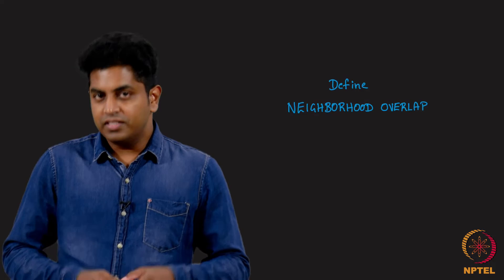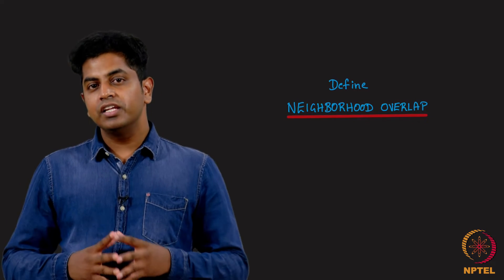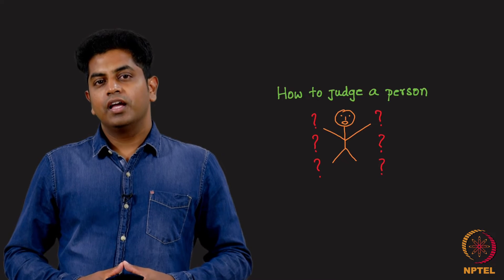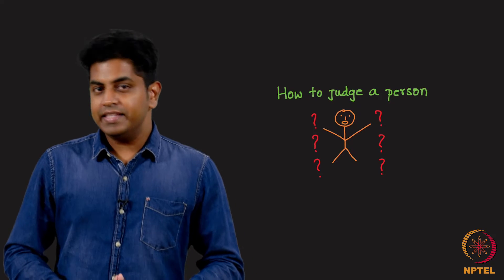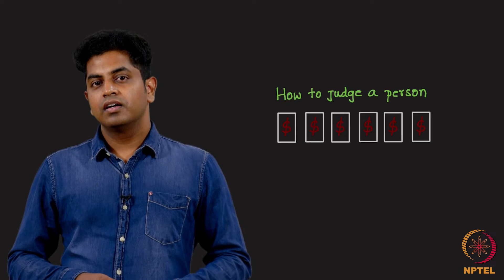So let me define what is a neighborhood overlap. It sounds slightly complicated. Let me use the right analogy to ensure that the definition is well understood by all of us. If I want to judge a person - philosophically speaking, is it based on how much he earns?